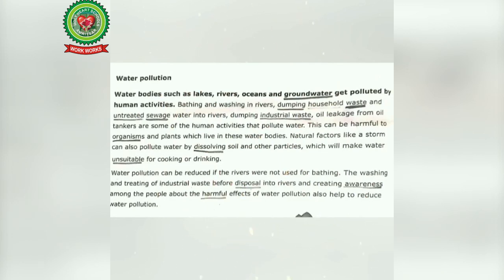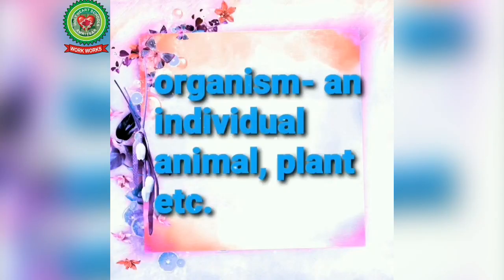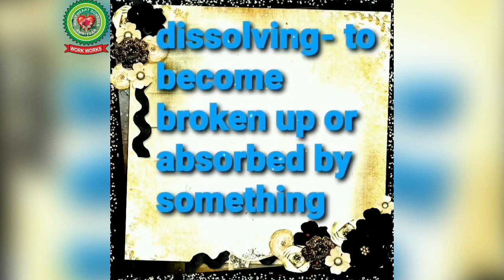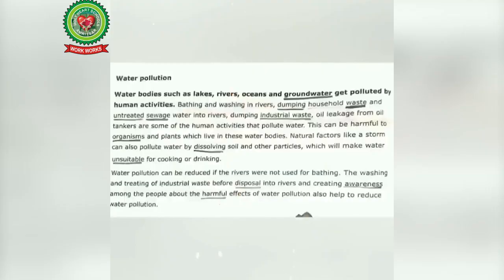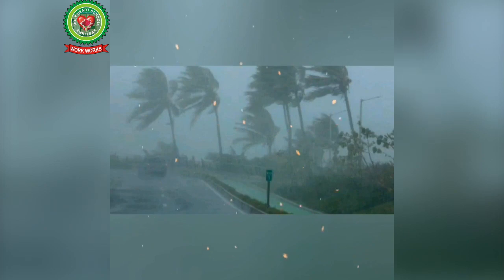This can be harmful to organisms and plants which live in these water bodies. Natural factors like a storm can also pollute water by dissolving soil and other particles, which will make water unsuitable for cooking or drinking. Key words: organism means an individual animal, plant, etc. Dissolving means to become broken up or absorbed by something. Unsuitable means not right or appropriate.